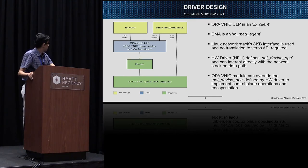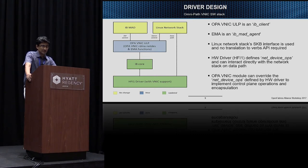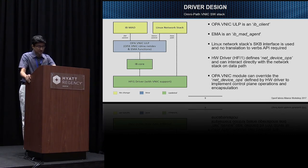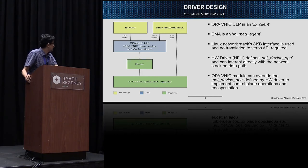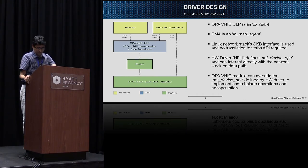The OPA-VNIC ULP module can override some of the NetDevice operations — like open, close, set multicast list, etc. — in order to do control plane operations. Hence it also interfaces with the Linux NetDev stack directly, depicted as the admin control. We have a case where both the ULP and the driver interface with the Linux network stack for a NetDevice object. This requires a kind of interfacing between the driver and the ULP, which is the interface update to the IB core that we will be talking about.